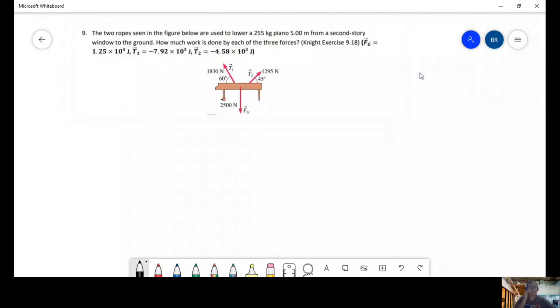So let's start working on this problem. We have two ropes, as seen in the figures below, lowering a 200, 250, 255 kilogram piano. That's the mass of the piano, five meters, so five meters from a second-story window to the ground.